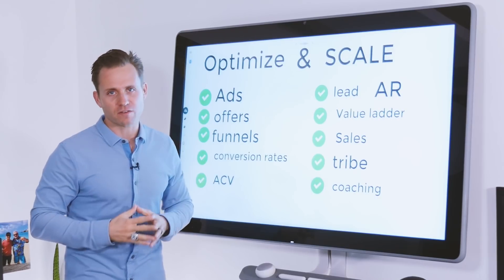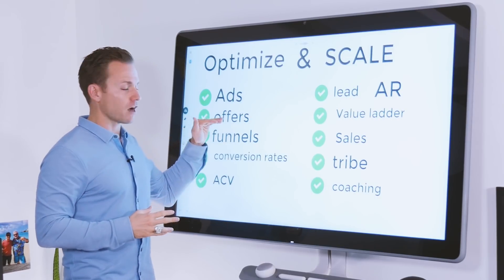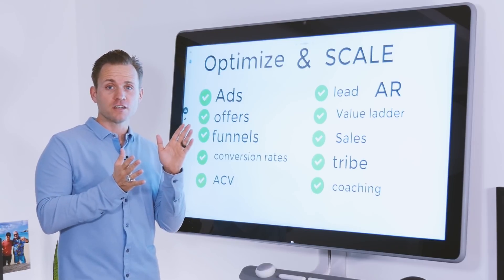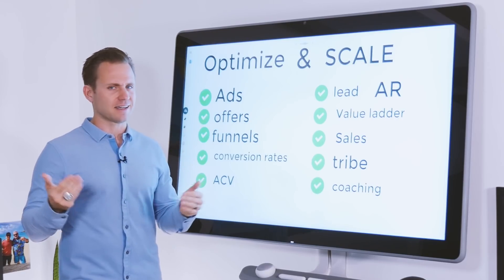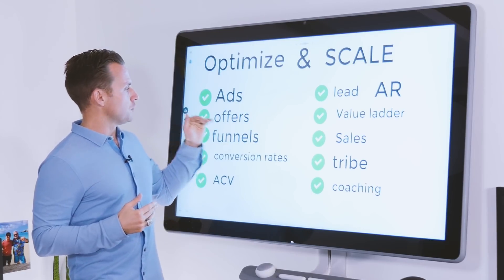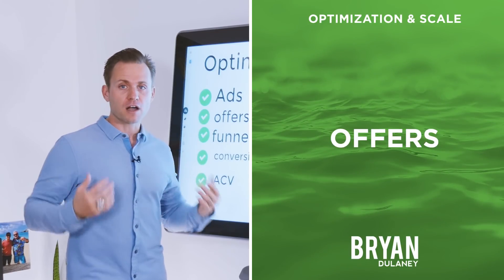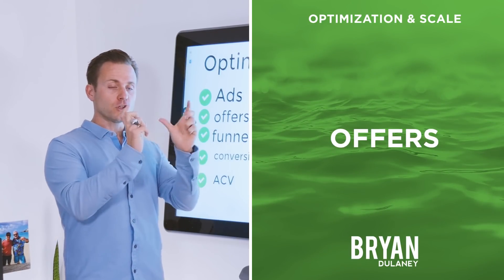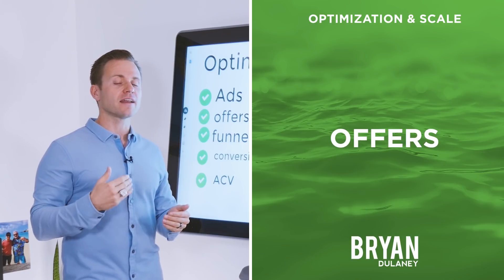You never have a traffic problem — you always have an offer and funnel problem. It's offer first, then funnel second, not the other way around. Do you have a checklist for optimization and scale when it comes to your offers, and what are you looking at on those offers?